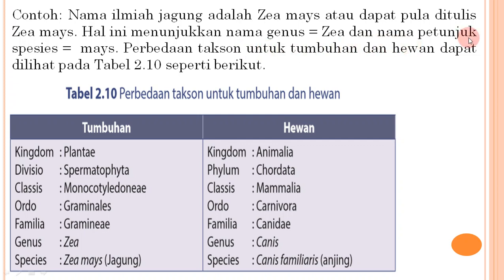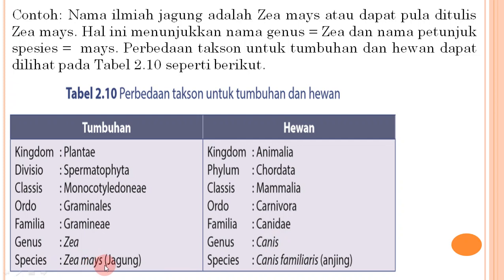Contoh perbedaan takson untuk tumbuhan dan hewan: jagung (tumbuhan) — Kingdom Plantae, Divisio Spermatophyta, Kelas Monocotyledonae, Ordo Graminalis, Familia Gramineae, Genus Zea, Spesies Zea mays. Anjing (hewan) — Kingdom Animalia, Filum Chordata, Kelas Mammalia, Ordo Carnivora, Familia Canidae, Genus Canis, Spesies Canis familiaris.